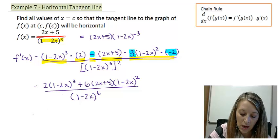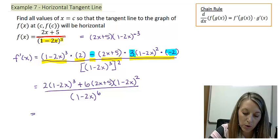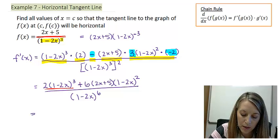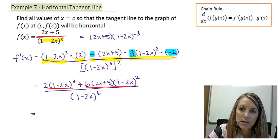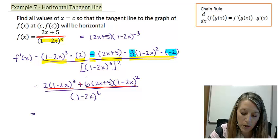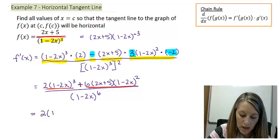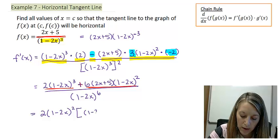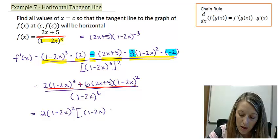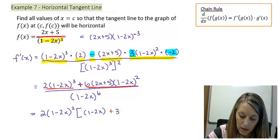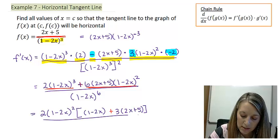To continue to simplify this, I want to factor between my two pieces in the numerator. So between this piece and between this piece. To figure out what we have in common, I look at 2 and 6 first. I know that there is a 2 in common. I also see that I have a (1 - 2x) in common. I can take out two of those. If I do that, that leaves me with one of these (1 - 2x)'s from my first piece plus a 3 times (2x + 5) in my second piece. And that is still all over (1 - 2x) to the sixth.